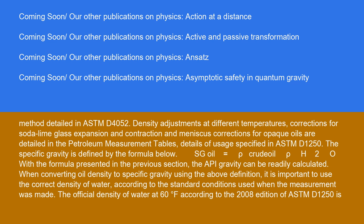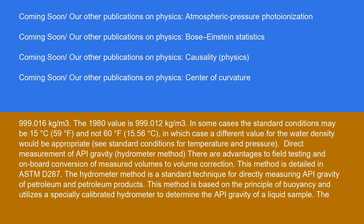The official density of water at 60 degrees Fahrenheit according to the 2008 edition of ASTM D1250 is 999.016 kilograms per cubic meter. The 1980 value is 999.012 kilograms per cubic meter. In some cases, the standard conditions may be 15 degrees Celsius (59 degrees Fahrenheit) and not 60 degrees Fahrenheit (15.56 degrees Celsius), in which case a different value for the water density would be appropriate. See standard conditions for temperature and pressure.